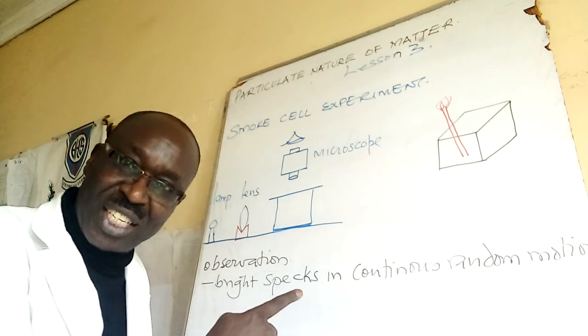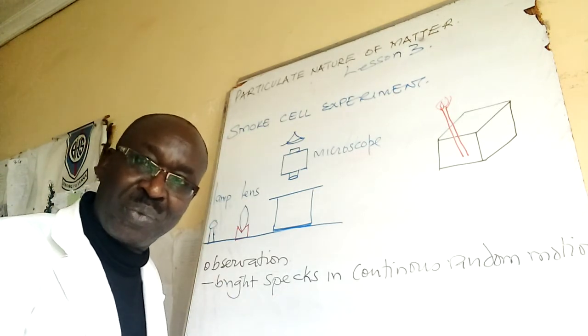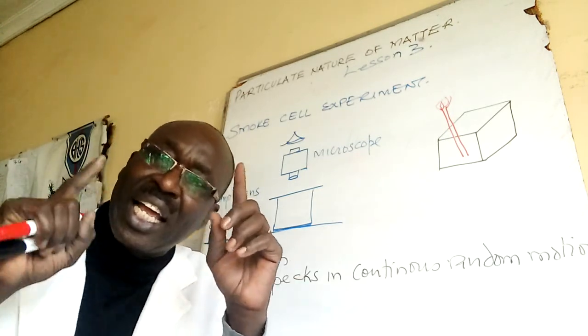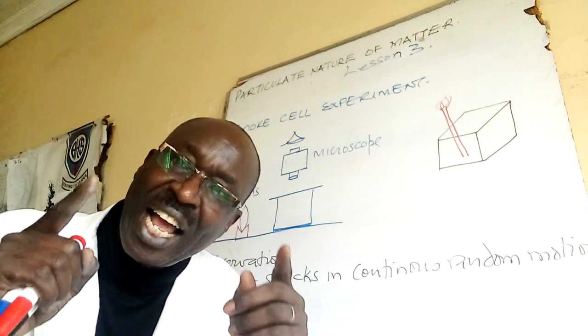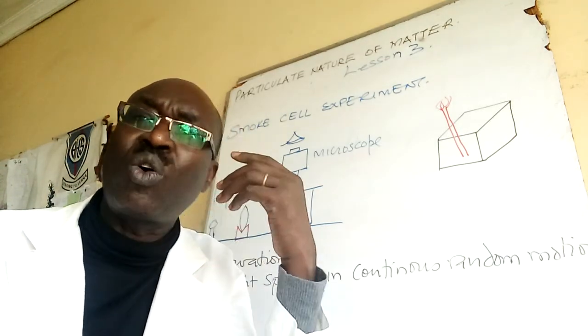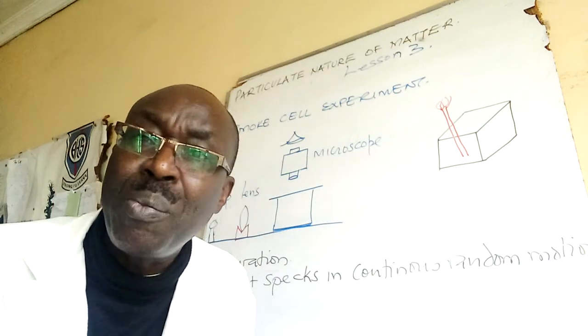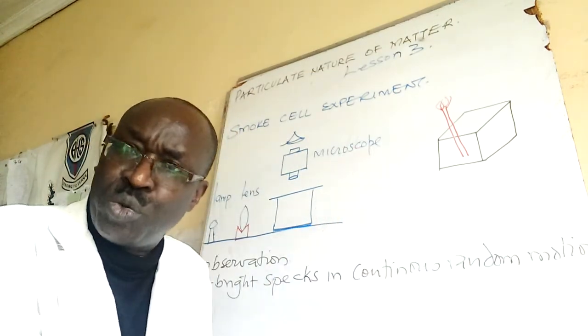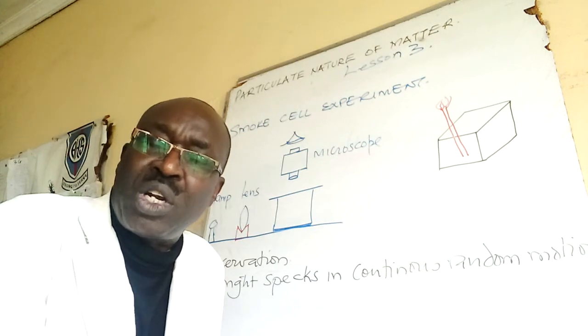We use chalk dust to study the particles of water. We are going to use smoke to study the nature of particles of air. What is your focus in this lesson? Brownian motion in air. In a nutshell, air is made up of particles which are in continuous and random motion.